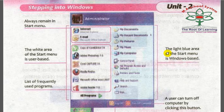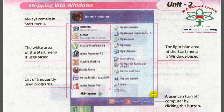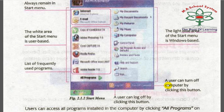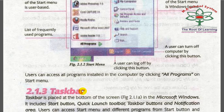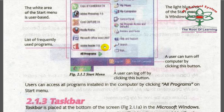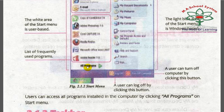The light blue area of the Start menu is Windows-based. A user can turn off the computer or log off by clicking the respective buttons. A user can access all programs installed on the computer by clicking 'All Programs' in the Start menu.